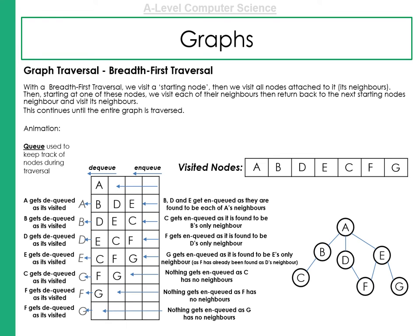They get enqueued as they're found to be neighbours of A. Once we've done that, we can remove A from the queue. We've visited all its neighbours. Remember, we've also got this array called visited nodes, where we keep a track of all the nodes we've currently visited.